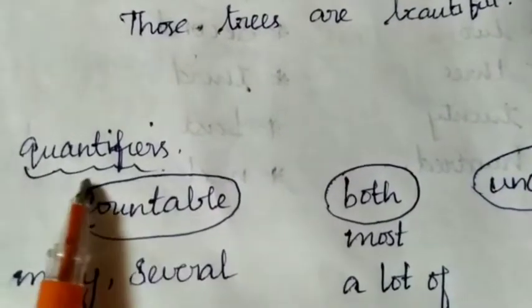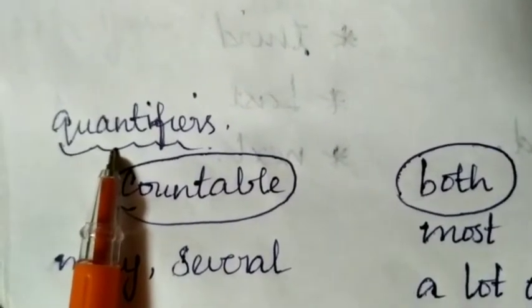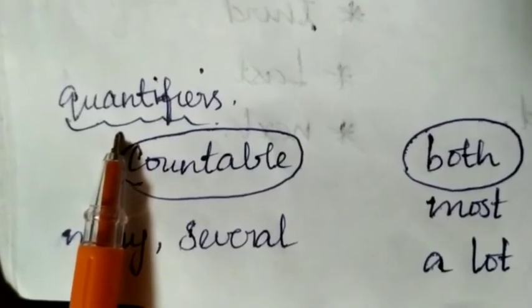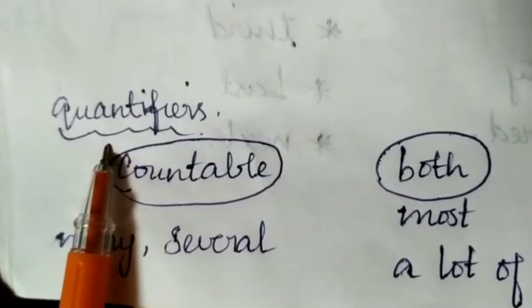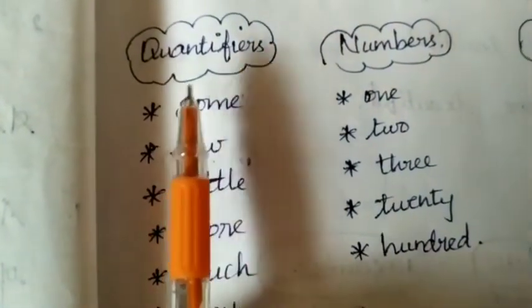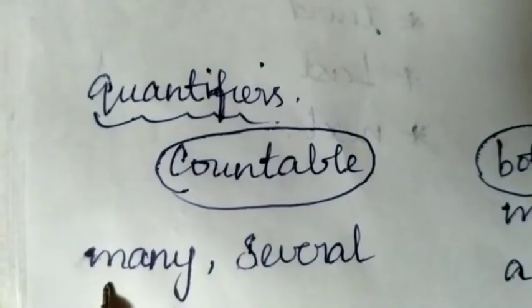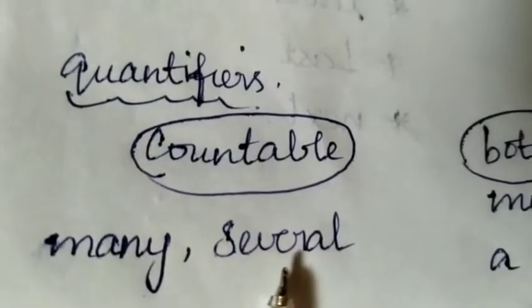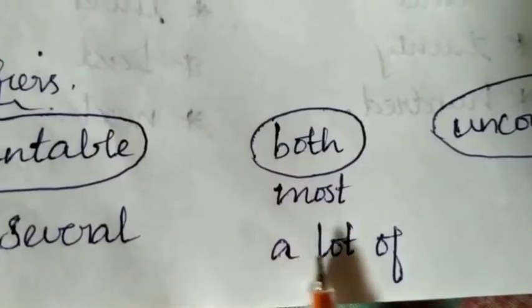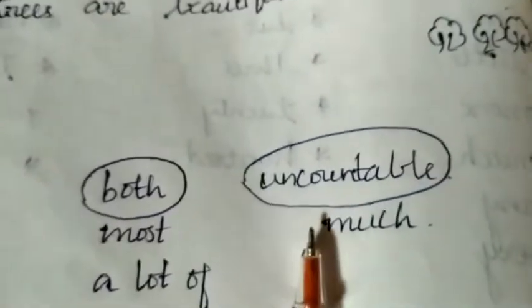Next type: Quantifiers. What is a quantifier? It indicates how much or how little of a noun is being discussed. Words under quantifiers include: some, few, little, more, much, any, and every. We use 'many' and 'several' for countable nouns. 'Most' and 'a lot of' can be used for both countable and uncountable nouns. 'Much' is for uncountable nouns.